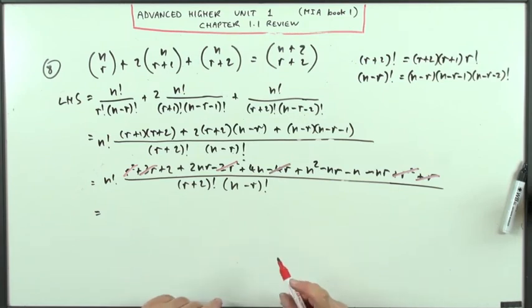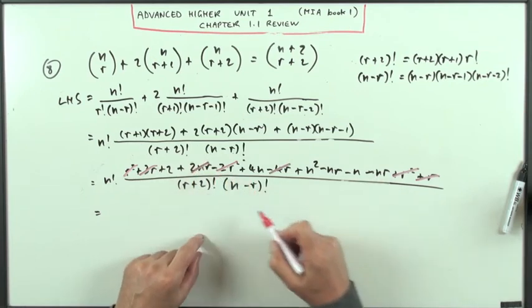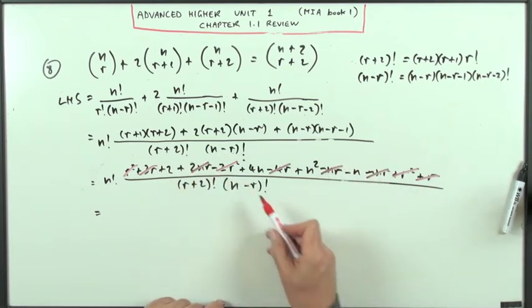What about the combinations of n's and r's? I've got two n r minus n r, so they're going to go. Two n r, and finally I'm just left with, that's the nice part.